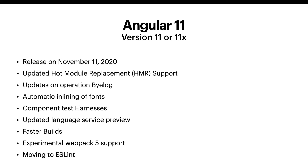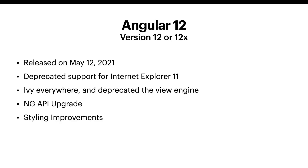Google introduced Angular 11 on November 11, 2020. New features included updated Hot Module Replacement with HMR support, operation by log, automatic inlining of fonts, updated component test harnesses, an updated language service preview, faster builds, and experimental webpack support. This was also the first version of Angular that moved toward ESLint support.